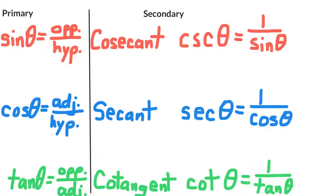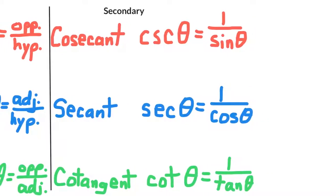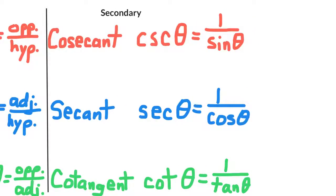Since this is the case, we know that the cosecant is the reciprocal of sine. So if sine is opposite over hypotenuse, then the cosecant is hypotenuse over opposite.